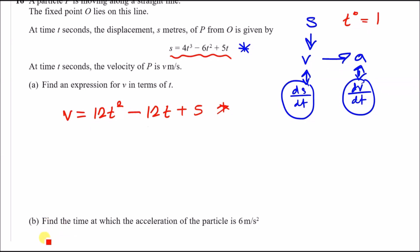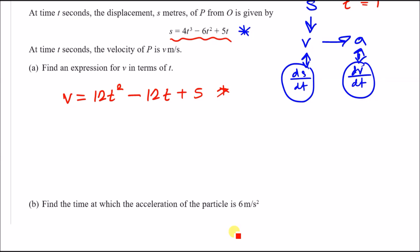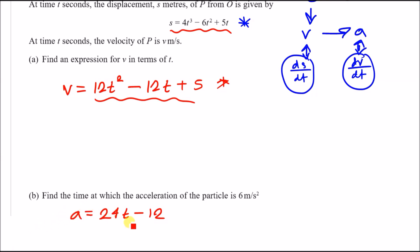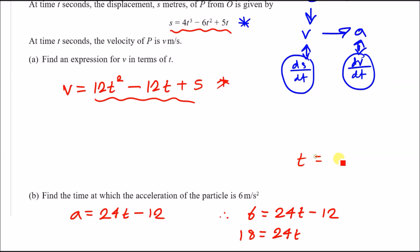For part b, find the time at which the acceleration is 6. First we need to find the acceleration by differentiating the velocity equation with respect to t. Drop the power 2 down: 2 × 12 = 24t. Differentiate −12t to get −12. So acceleration a = 24t − 12. Now set a = 6: 6 = 24t − 12. Add 12 across: 18 = 24t. Divide by 24 and you get t = 0.75.